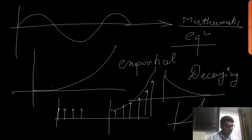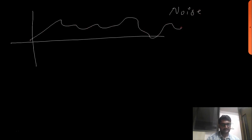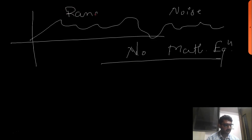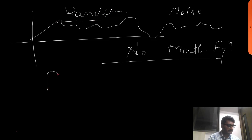Whereas in a random signal, the pattern of the signal cannot be predicted. The very famous example of this is noise — it will be something like this. We cannot write any mathematical equation for it, and therefore this is a random signal. This is why many times you might have heard the term 'random noise'.